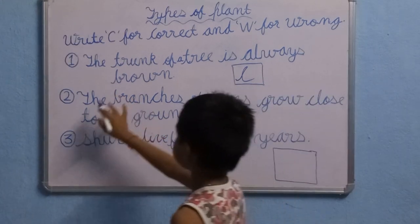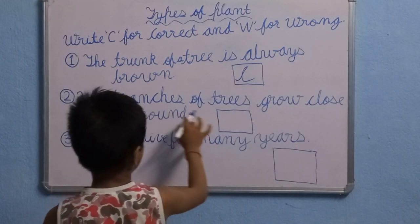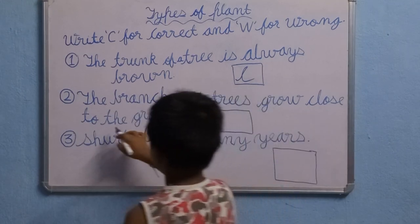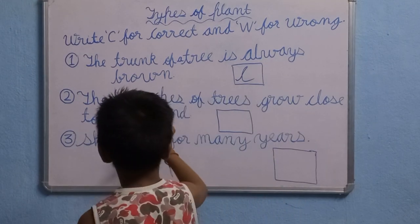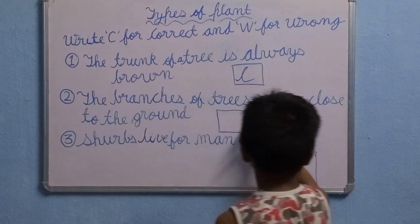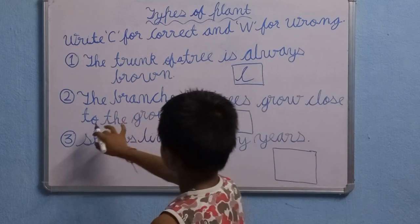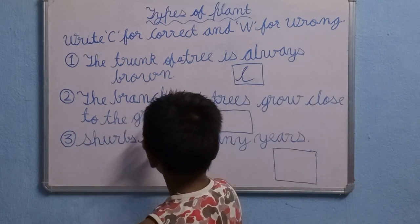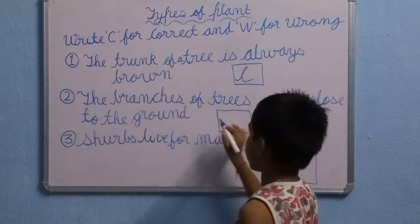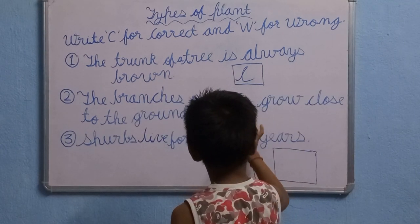Next question. The branches of trees grow close to the ground. This will be wrong — W for wrong.